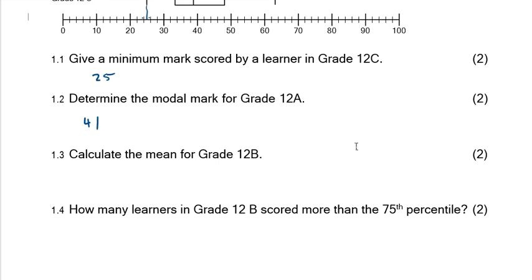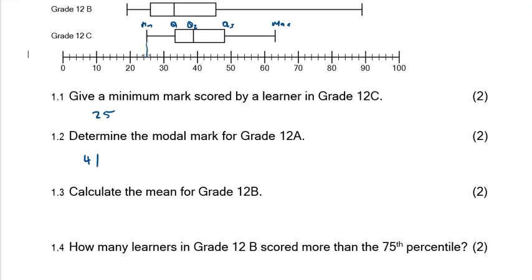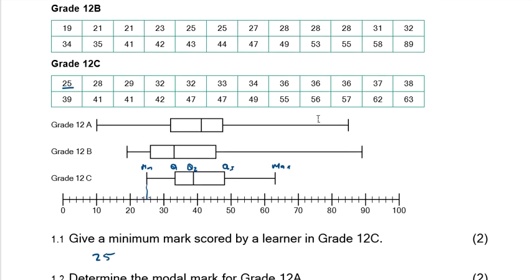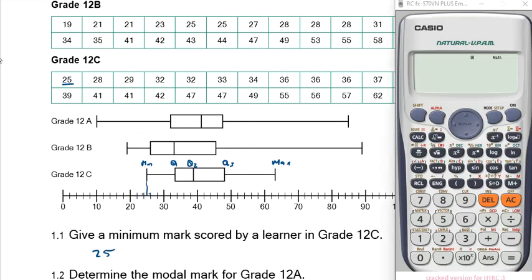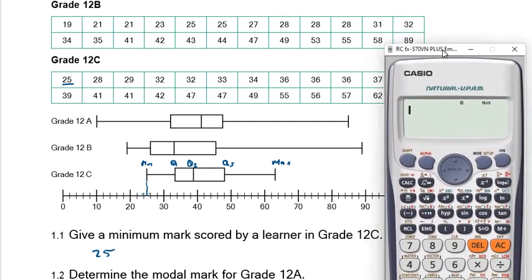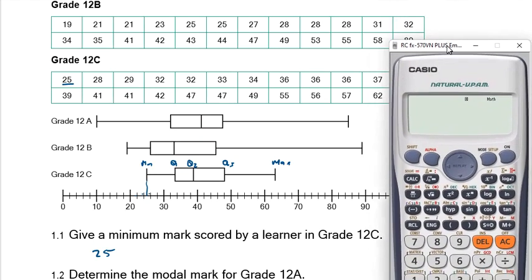Question 1.3: Calculate the mean value for 12b. To calculate the mean value for 12b, we will add all the values for 12b, get the total, and then divide it by the number of those values — the number of learners in 12b. So we want to add all the values for 12b and divide by how many there are.